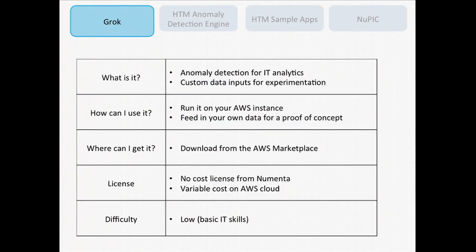First, Grok — we've heard a little bit about it today. As a reminder, it's a product that does anomaly detection on IT metrics. We also built a custom data interface so you can plug your own data into it to try different things. Today you can download this from the Amazon Web Services Marketplace, and it's pretty straightforward to get started. You can download it for free from Numenta — there's a no-cost license — but you do need to pay Amazon for the web services. You just spin up your instance, load it, and you can start monitoring your metrics on the server immediately or feed in your own data.